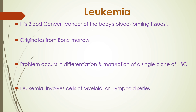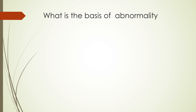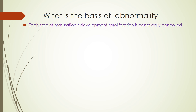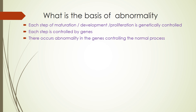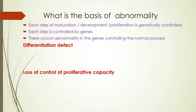Leukemia involves cells of the myeloid or lymphoid series, depending on which series has been affected. The basis of abnormality is that each step of maturation, development, or proliferation is genetically controlled by genes — parts of DNA. Abnormality occurs in the genes controlling the normal process of development and maturation, resulting in a differentiation defect, loss of control of proliferative capacity, or an accumulative disease.